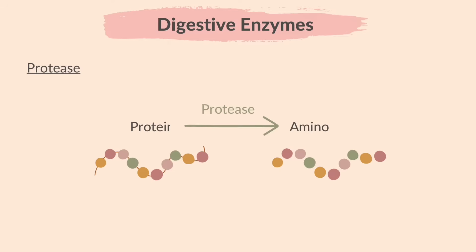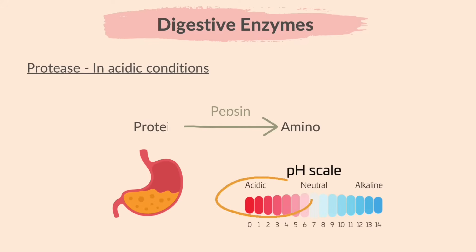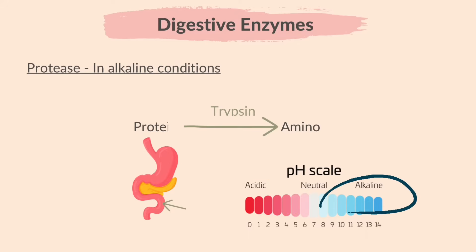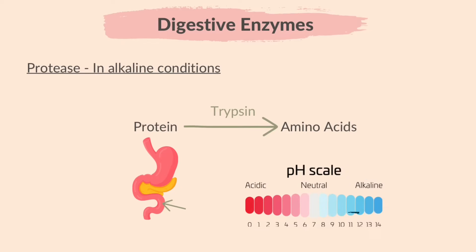The enzyme protease breaks down protein to amino acids. In the stomach, where the conditions are acidic, the protease pepsin breaks down protein to amino acids. In the small intestine, where the conditions are alkaline, the protease trypsin breaks down proteins to amino acids.